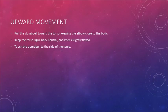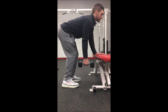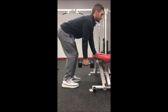The second phase is the upward movement. Pull the dumbbell towards the torso, keeping the elbow close to the body. Keep the torso rigid, back neutral, and knees slightly flexed. Make sure to touch the elbow to the side of the torso. Here I have provided a video of Taylor doing the upward movement.